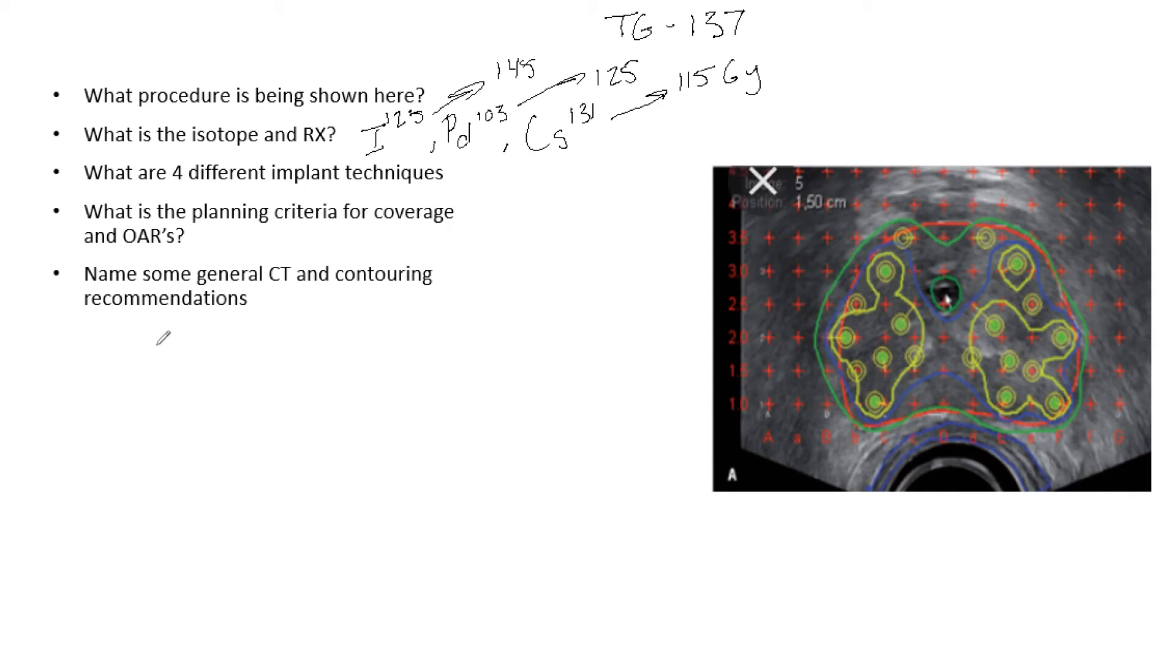What are the planning criteria for coverage and OARs? This certainly could be a loaded question. Your V100 needs to be at or greater than 95%. You want your CTV to be covered, so 90% of CTV is at or greater than 100% of your dose.